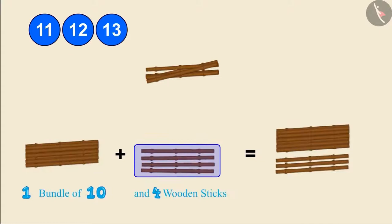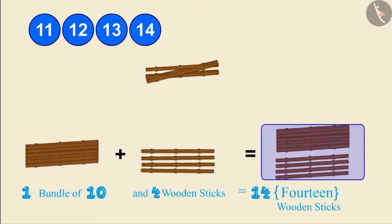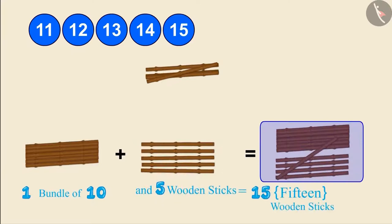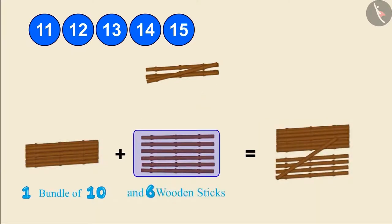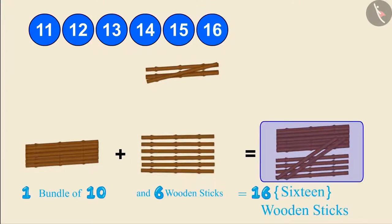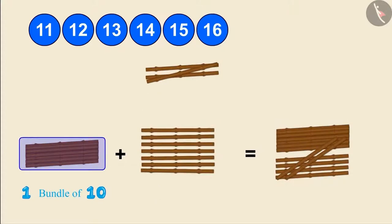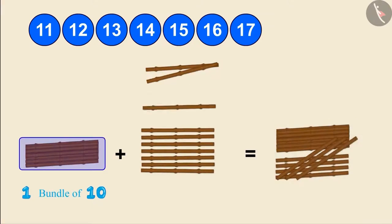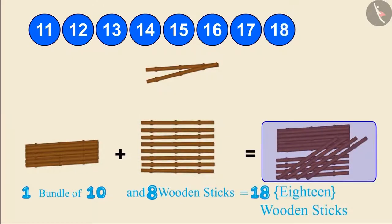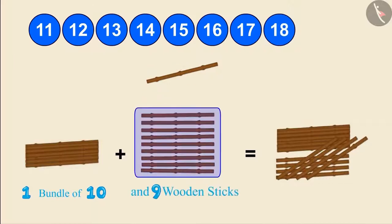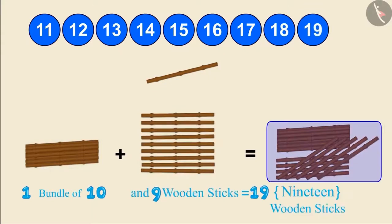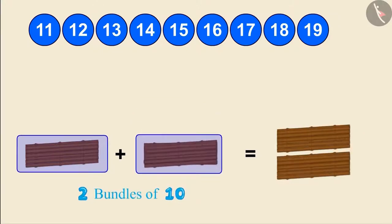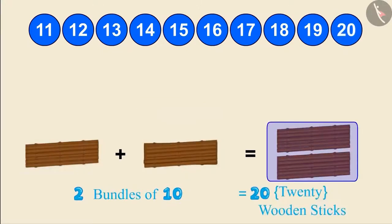One bundle of 10 and four wooden sticks make 14 wooden sticks. One bundle of 10 and five wooden sticks make 15 wooden sticks. One bundle of 10 and six wooden sticks make 16 wooden sticks. One bundle of 10 and 7 wooden sticks make 17 wooden sticks. One bundle of 10 and 8 wooden sticks make 18. One bundle of 10 and 9 make 19, and one bundle of 10 and 10 more wooden sticks make 2 bundles of 10, which makes 20 wooden sticks.